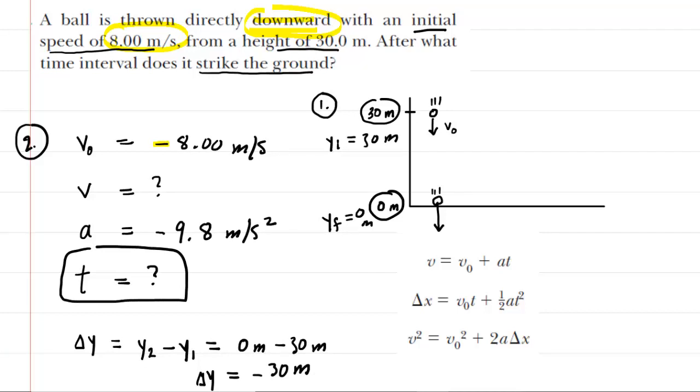A lot of students, when they try to solve this problem, they forget that the displacement or the change in position is negative. And indeed, we've shown that that is the case. Now we've listed all the known parameters. The third thing to do is to select the appropriate one-dimensional kinematics equation.